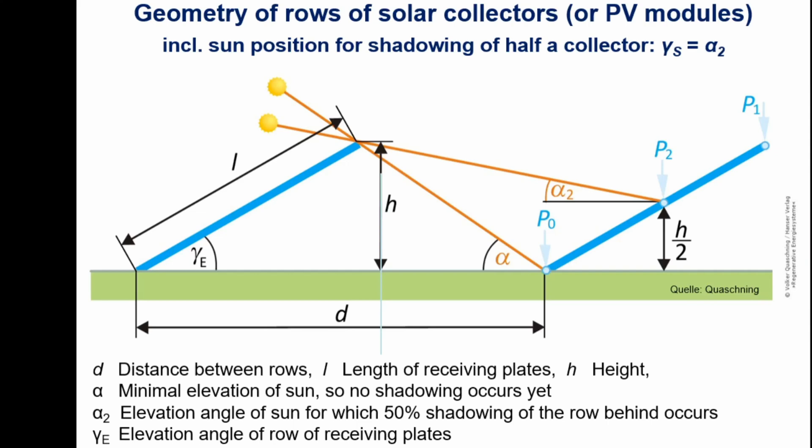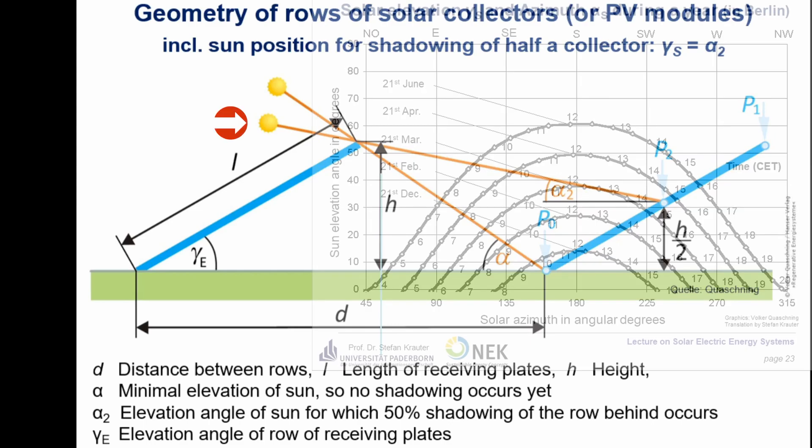So the question is how far we have to keep the distance between rows of solar collectors or solar modules in order to avoid shadowing, especially when the sun is in a very low position.